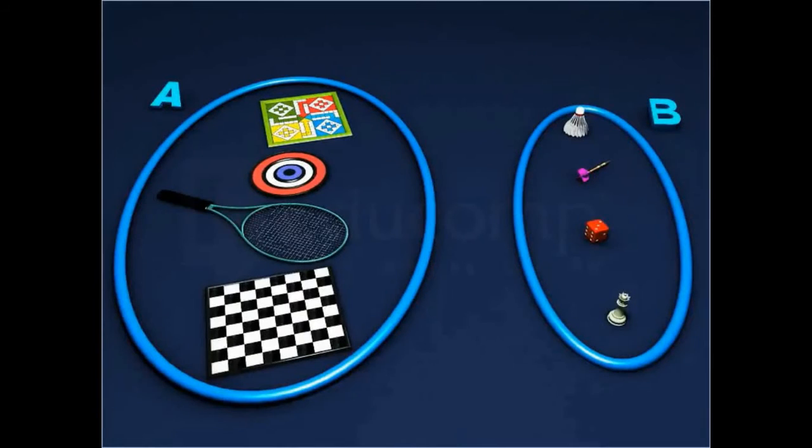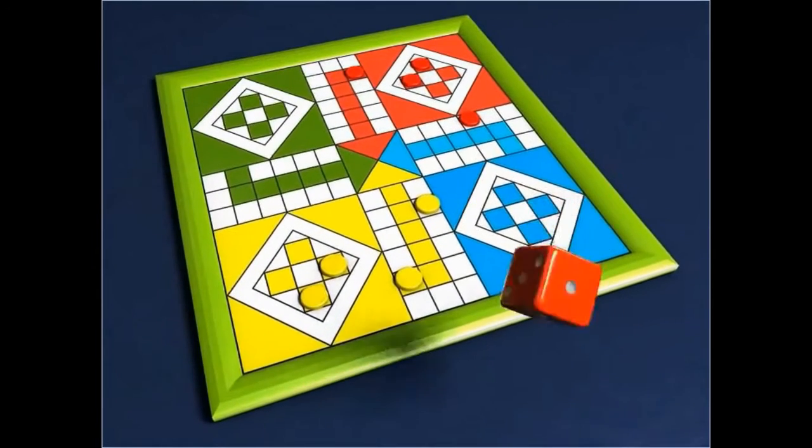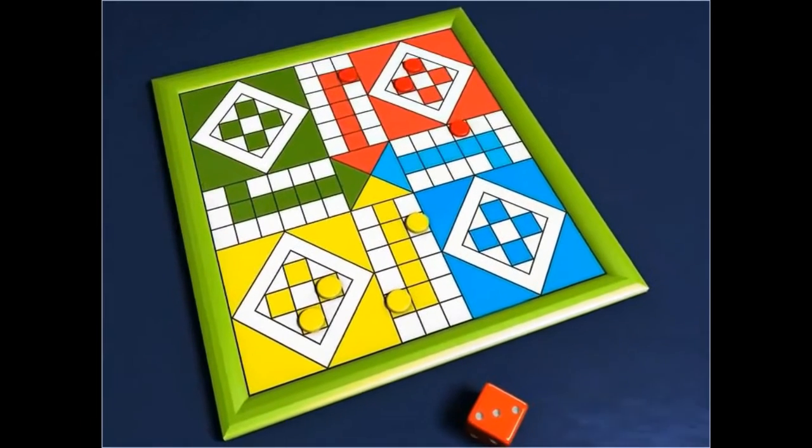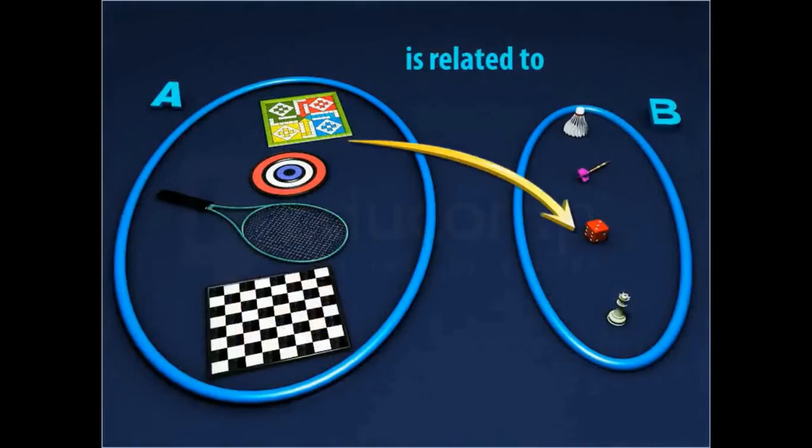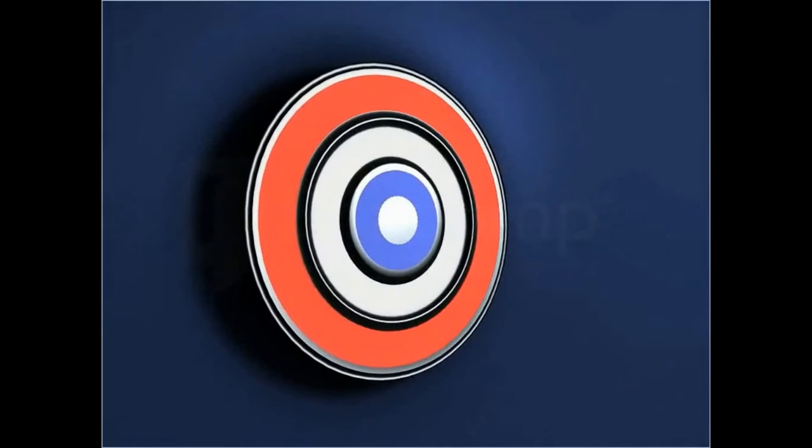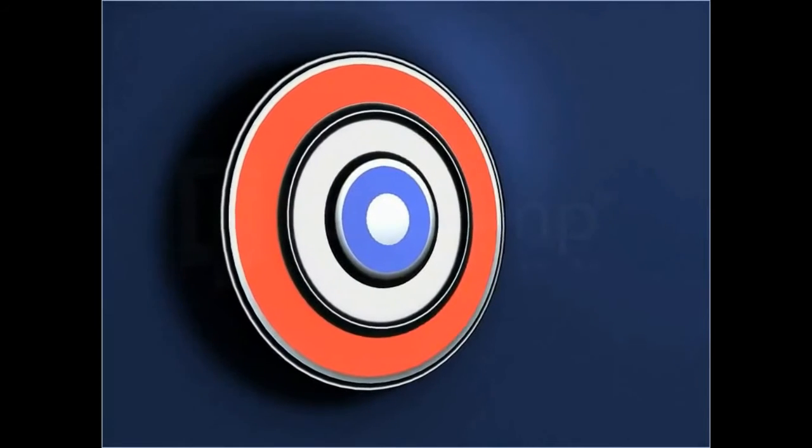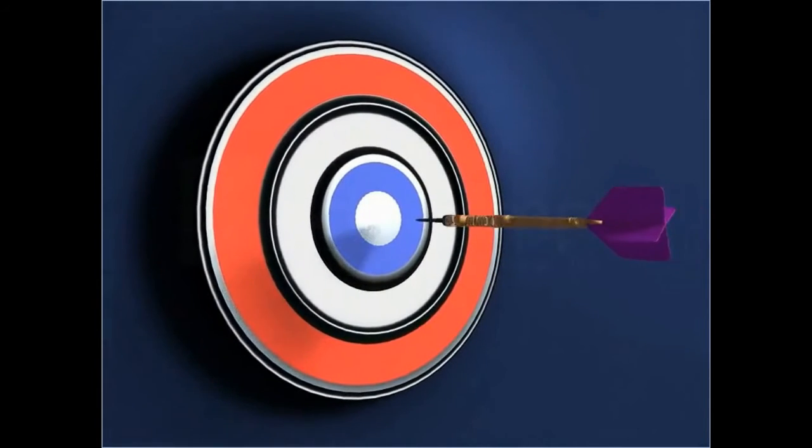If you are given that the two sets are related to each other by the relation is related to, then ludo in the first set is related to a dice in the other set. Also, a dart board in set A is related to a dart arrow in set B.